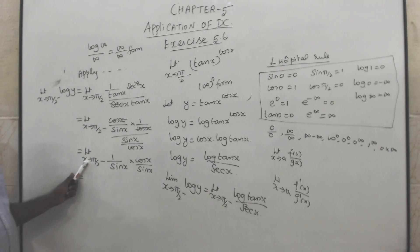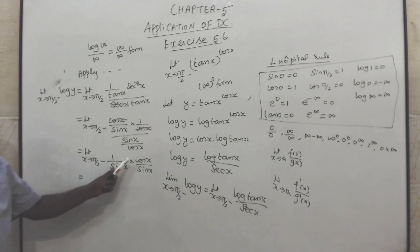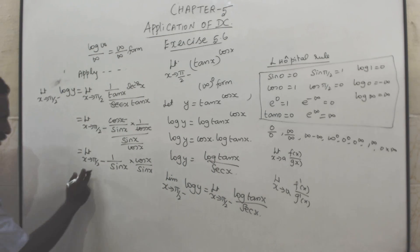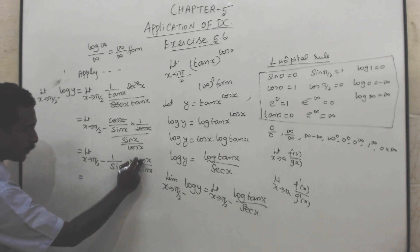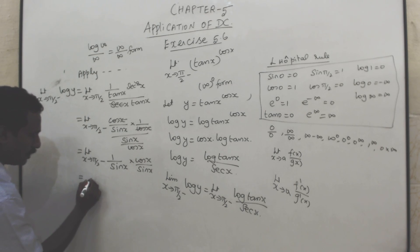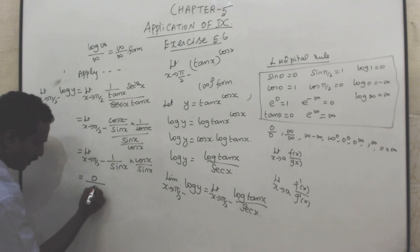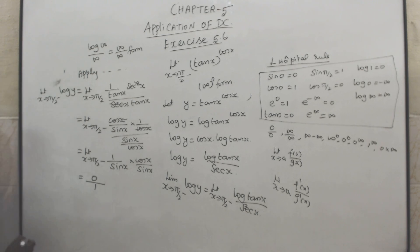Limit x tends to π/2 minus of tan x to the power cos x. Here sin x by cos x is cos x by sin x — cos(π/2) is 0, sin(π/2) is 1, so 1 into 1 is 1.